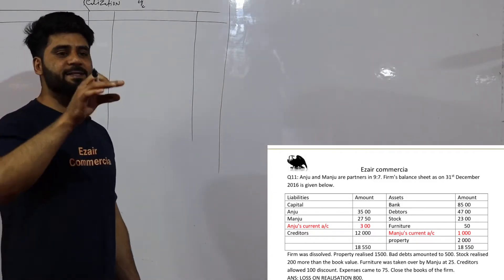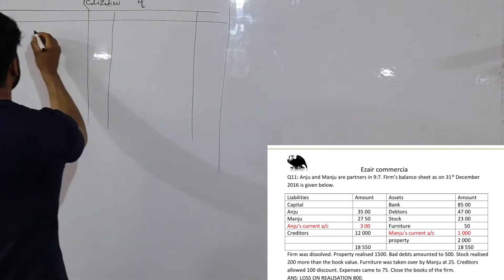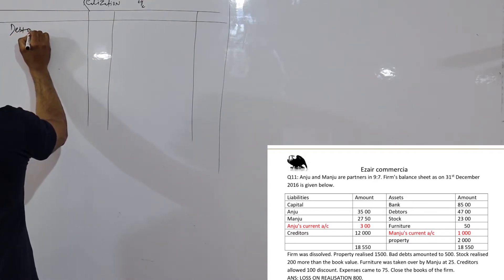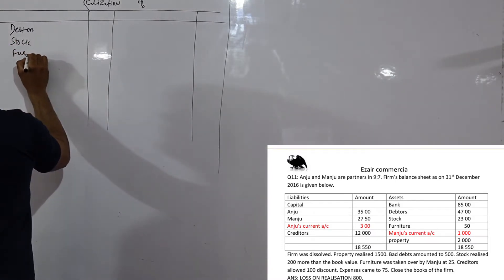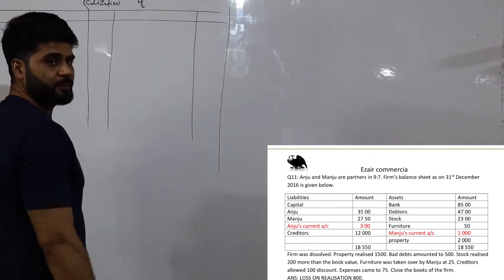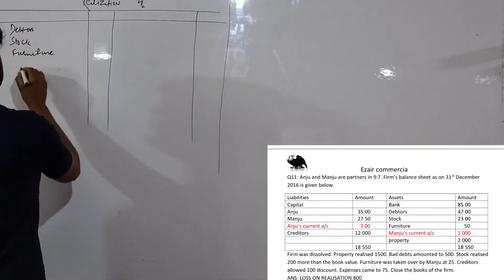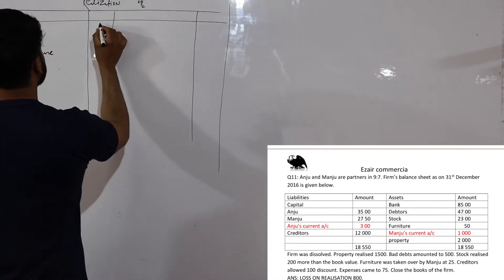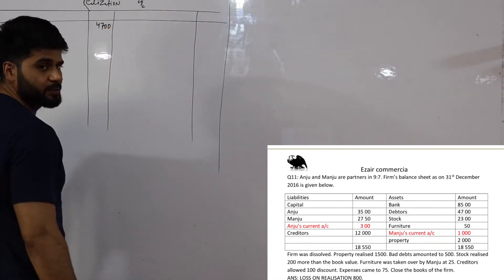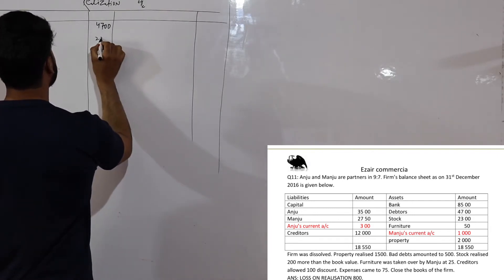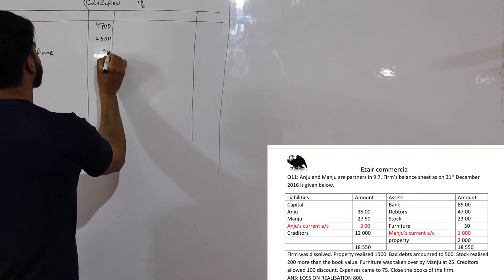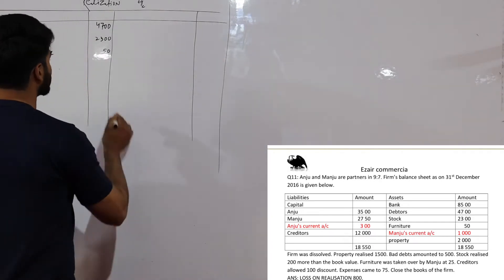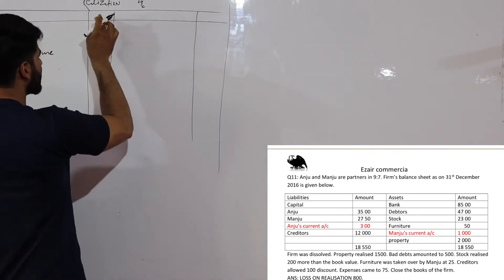Tell me what the first step is - all assets are debited. Who are the assets? Debtors, stock, furniture, and property. So the debtor is 4700 dollars. Stock is 2300 dollars. Furniture is 50. And after that there is property, that's 2000 dollars. So all assets are debited, which means any asset is debited.